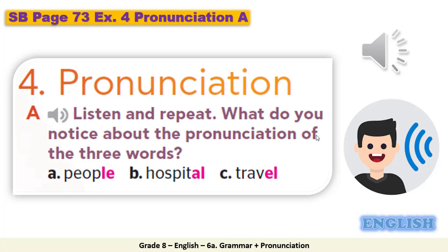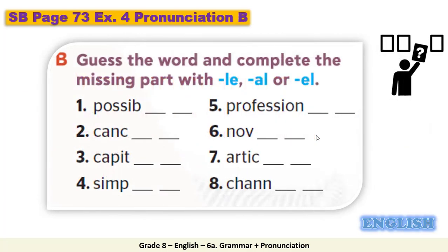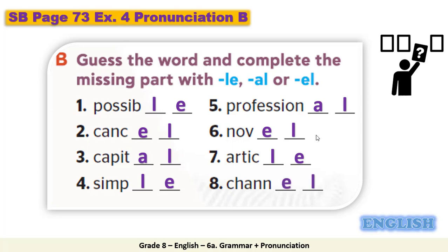Now let's move to part B of the pronunciation exercise. Guess the word and complete the missing part with L-E, A-L, or E-L. Let's check your answers. 1: 'possible' — L-E. 2: 'cancel' — E-L. 3: 'capital' — A-L. 4: 'simple' — L-E. 5: 'professional' — A-L. 6: 'novel' — E-L. 7: 'article' — L-E. 8: 'channel' — E-L.